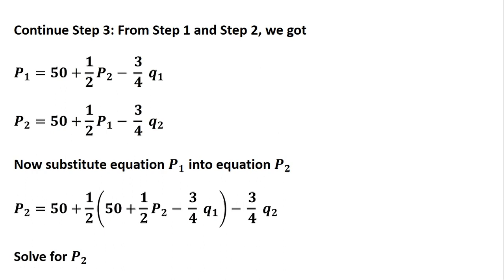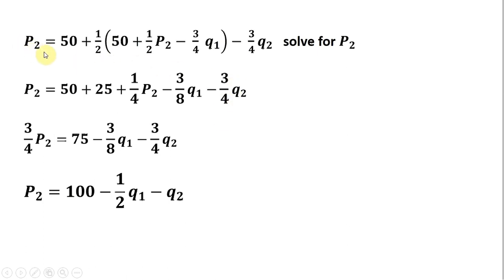Now we do the same thing in reverse — substituting P₁ into the equation for P₂. Here's Firm 2's price equation; where I have P₁ I'm plugging in the circled expression. Simplifying for P₂: multiplying the ½ through the parentheses, adding the constant terms, subtracting ¼P₂ from both sides, and then multiplying everything through by 4/3 — we get the mirror image of the equation we just solved for. We've achieved our goal: P₂ is just a function of its own output and the rival firm's output.